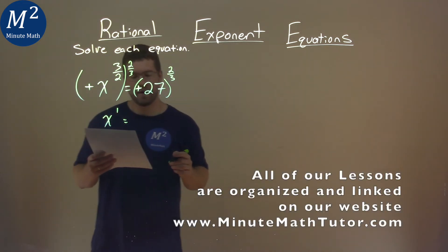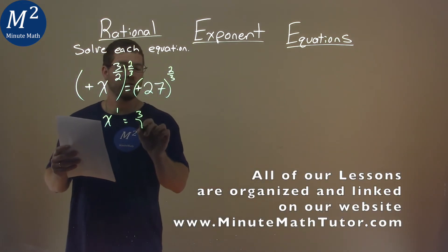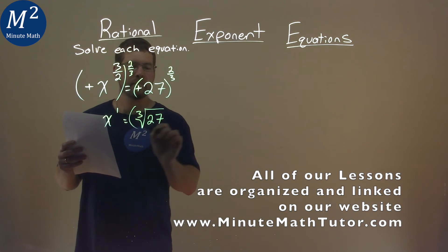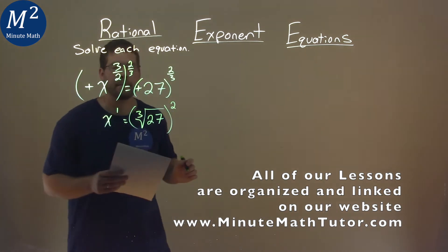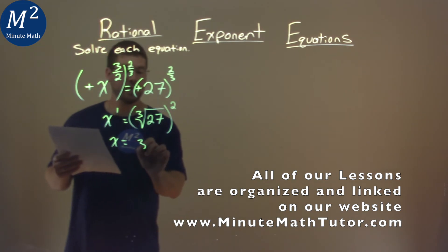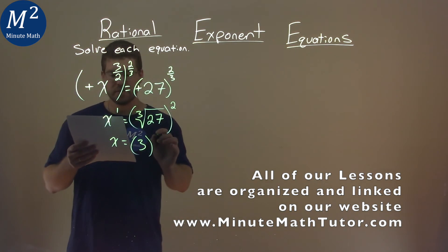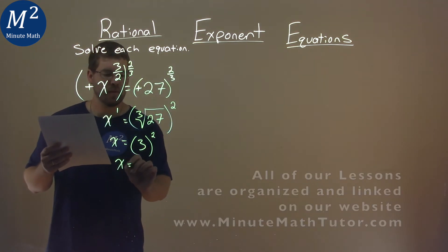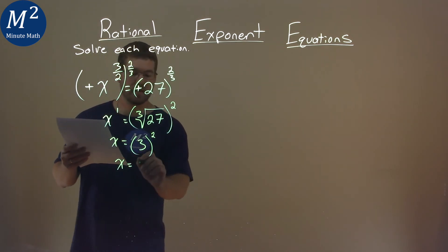27 to the 2 thirds power is the same thing as the third root of 27, all squared. Well let's keep on going. What's the third root of 27, which is a 3, and we still have to square that. And what's a 3 squared? Well 3 squared is a 9.